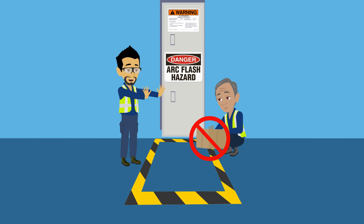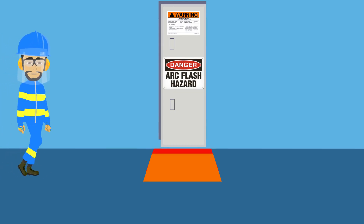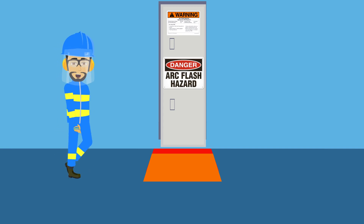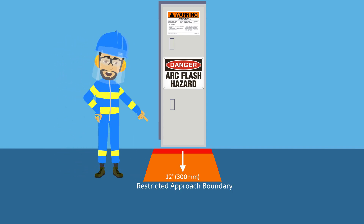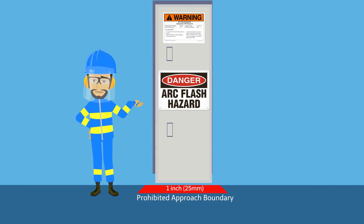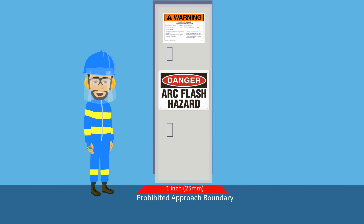Only qualified personnel wearing the appropriate PPE can enter the restricted approach boundary. Based on a 480 volt panel, this boundary begins at 12 inches or 300 millimeters from electrical equipment. The prohibited approach boundary for a 480 volt panel is 1 inch or 25 millimeters from electrical equipment, and is very much limited to qualified personnel wearing the appropriate PPE and specialized training.